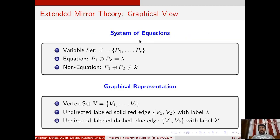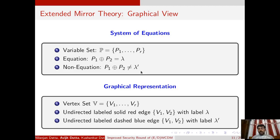We can view the system of equations and non-equations in terms of a graph. We represent the set of variables as a set of vertices. If two variables are associated through an equation, say p1 + p2 = λ, we give a solid red undirected edge between the corresponding vertices. If two variables are associated through a non-equation, say p1 + p2 ≠ λ', we put a dashed blue undirected edge with the corresponding label between the two vertices.